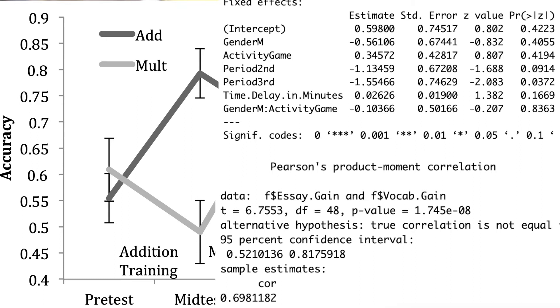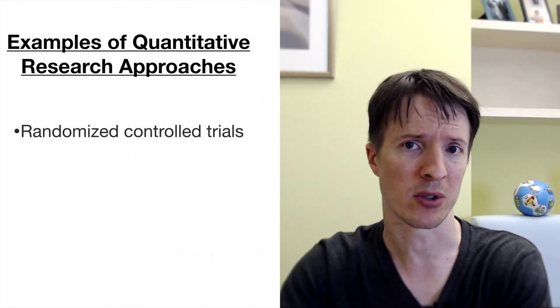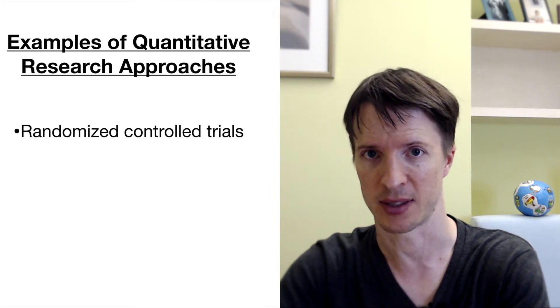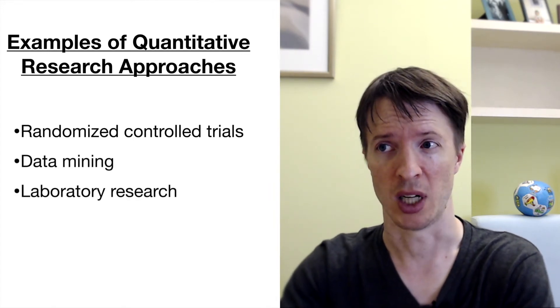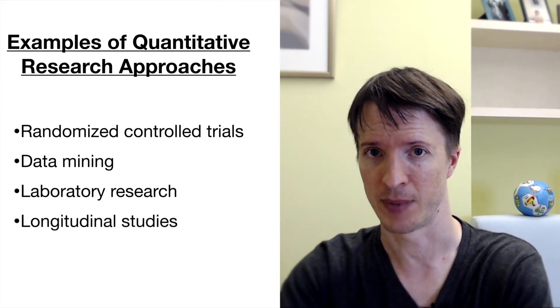Once you have quantitative data you can do quantitative things with it: count, add things together, take averages, get standard deviations, run statistical tests, and develop mathematical models. The results of quantitative research in the social sciences usually look something like correlation coefficients, confidence intervals, p-values, and regression models. Quantitative methods include randomized controlled trials, data mining, laboratory research, and longitudinal studies.